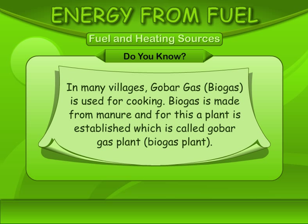In many villages, copper gas or biogas is used for cooking. Biogas is made from manure, and for this a plant is established, which is called a copper gas plant or biogas plant.